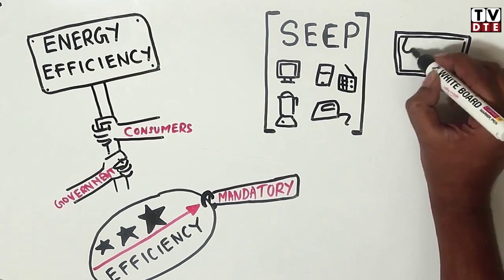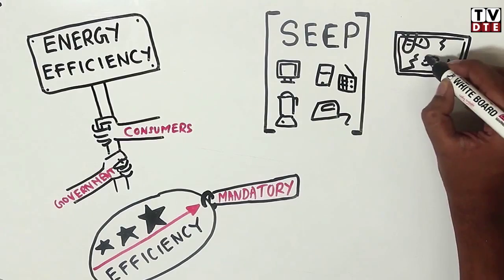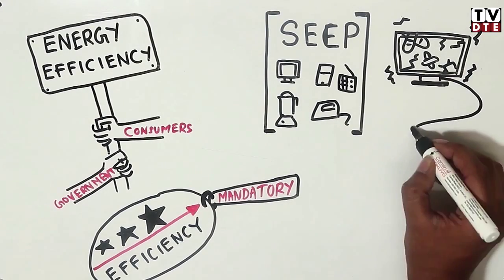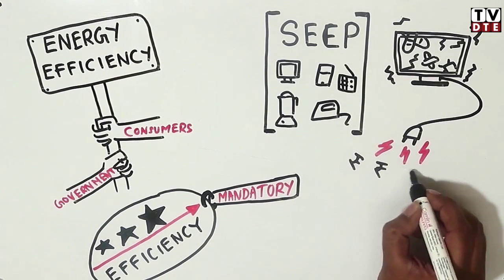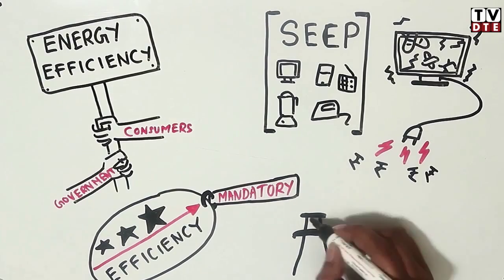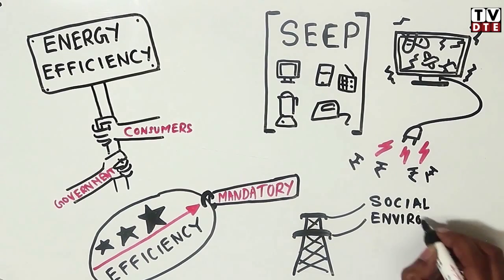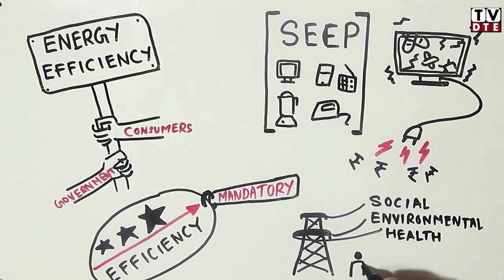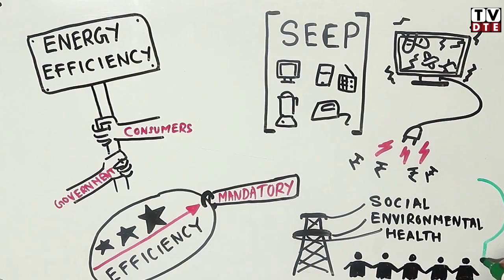At the same time, using a super-efficient device carelessly could see the gains diminish, leading to more energy consumption. While electricity generation has huge social, environmental and health costs, each one of us as consumers can help to mitigate these costs by being judicious about the power that we use.